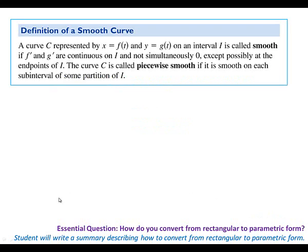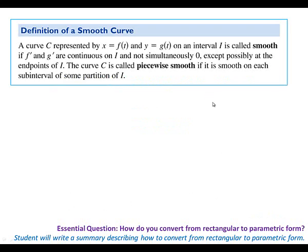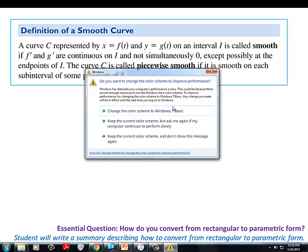So, yesterday — do we have the definition of a smooth curve at the top of your notes? A curve C is represented by two parametric equations. It's called smooth if the derivatives are continuous and not simultaneously zero, except possibly at the endpoints. The curve C is called piecewise smooth if it's smooth on each sub-interval of some portion I. Basically, if the picture looks like something that's going to be differentiable, we would say it's a smooth curve.